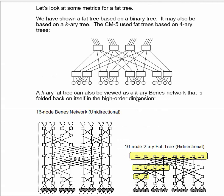Now let's look at some metrics for a fat tree. Our diagram has shown a fat tree based on a binary tree, but it can also be based upon a k-ary tree. In fact, the CM5 used fat trees based on quaternary trees. That is, they had four inputs and four outputs each. So you can see what the topology looks like there.